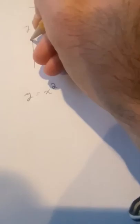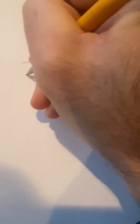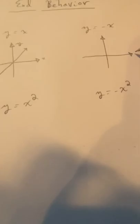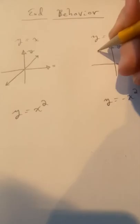The graph of y equals x looks like a straight line going through the origin. Y equals negative x is a very similar looking graph, but instead of going through the third and first quadrant, it goes through the second and the fourth quadrant — it's almost reflected.